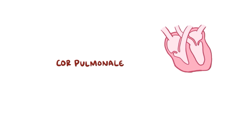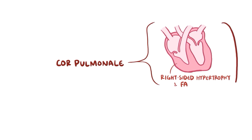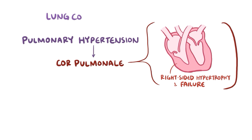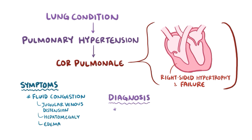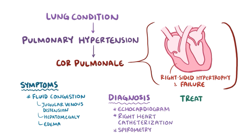As a quick recap: cor pulmonale is right heart hypertrophy, dysfunction, or failure caused by pulmonary hypertension from a lung condition. This results in systemic fluid congestion leading to jugular venous distension, hepatomegaly, and edema. After diagnosis with echocardiography, right heart catheterization, and potentially spirometry, treatment includes addressing the underlying lung condition and administering supplemental oxygen.